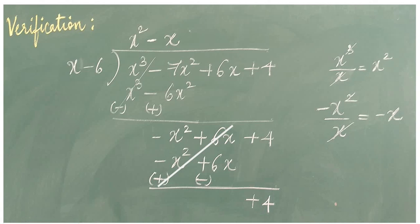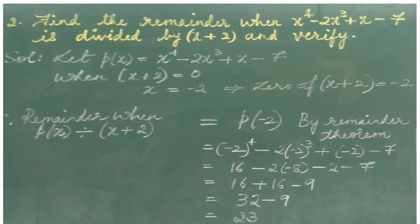Therefore, when x cube minus 7x square plus 6x plus 4 is divided by x minus 6, 4 will be the remainder — verified. Now let's find the remainder when x to the 4 minus 2x cube plus x minus 7 is divided by x plus 2.